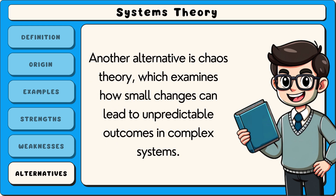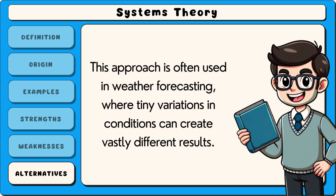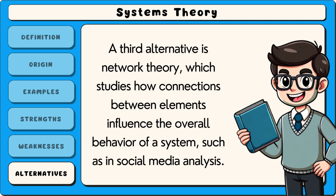Another alternative is chaos theory, which examines how small changes can lead to unpredictable outcomes in complex systems. This approach is often used in weather forecasting, where tiny variations in conditions can create vastly different results. A third alternative is network theory, which studies how connections between elements influence the overall behaviour of a system, such as in social media analysis.